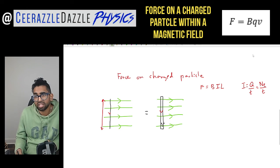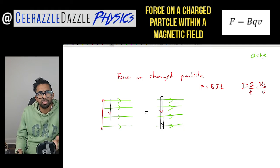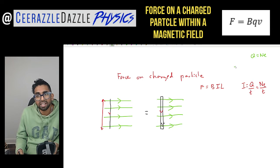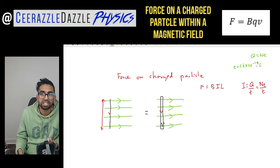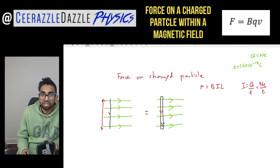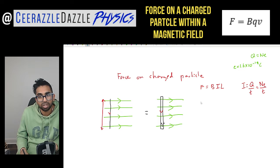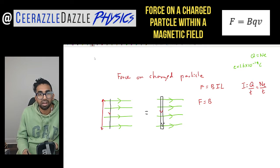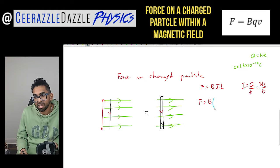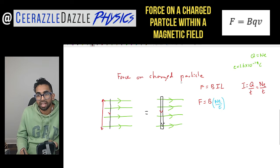We can remember from previously that the charge Q is equal to Ne — total charge equals the number of electrons times by the charge of each electron. E is going to be a constant: 1.6 times by 10 to the power of minus 19 coulombs. Now we're going to take this equation and substitute it back in, so F becomes B, and then I is now open bracket Ne divided by t, close bracket, and L.